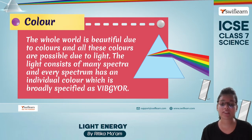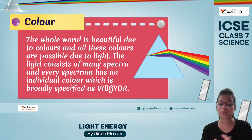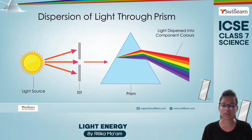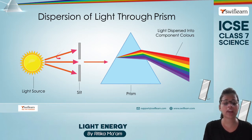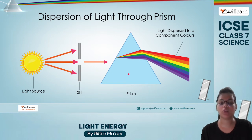Next is colors. Our world is very beautiful because of the presence of various colors, and all these colors are possible just because of light. Light consists of many spectra, and all these spectra have individual colors — we have also seen rainbows, which show the VIBGYOR colors. Dispersion of light through a prism: a prism is a triangular 3D object which disperses or scatters light into its component colors. If we pass any light source through a prism, that light will be scattered into its component colors, and that phenomenon is known as dispersion.